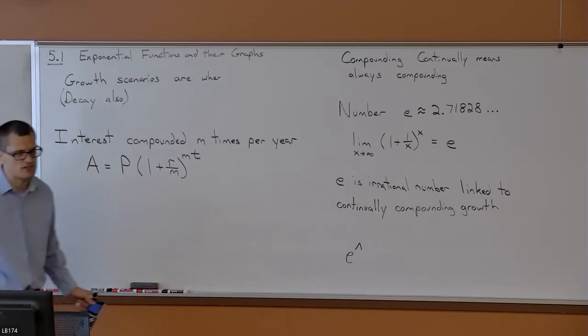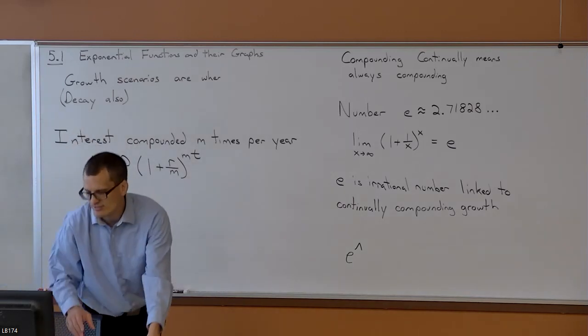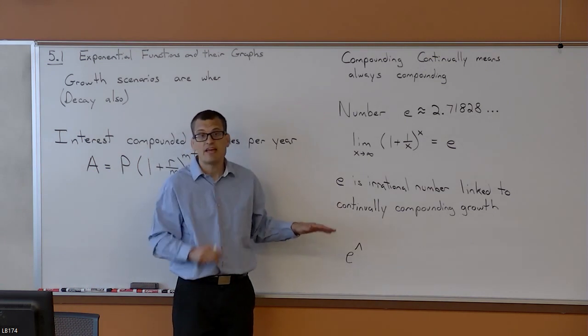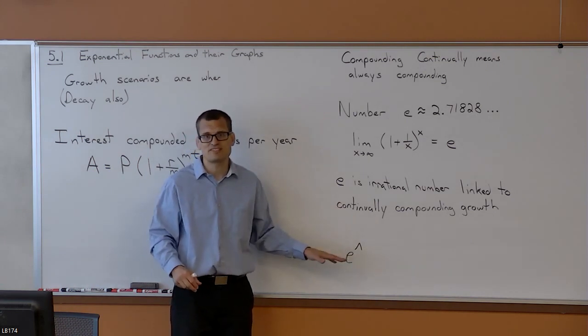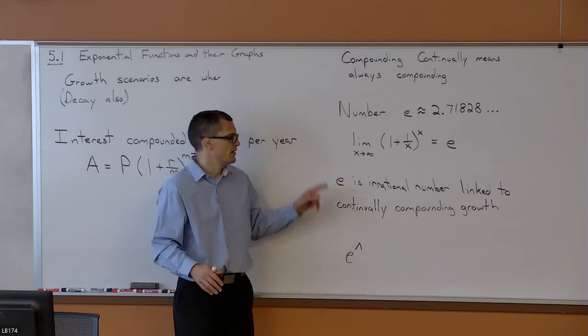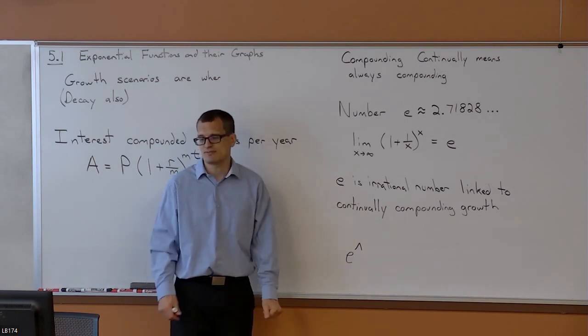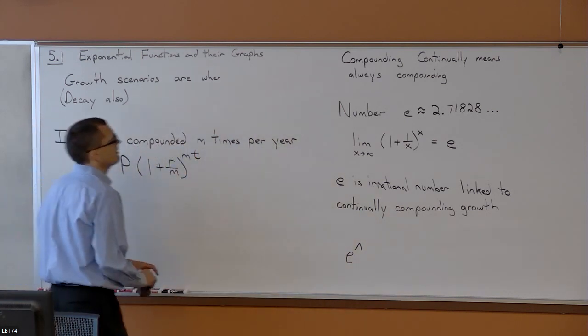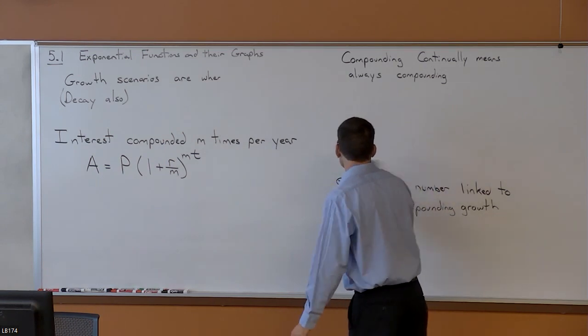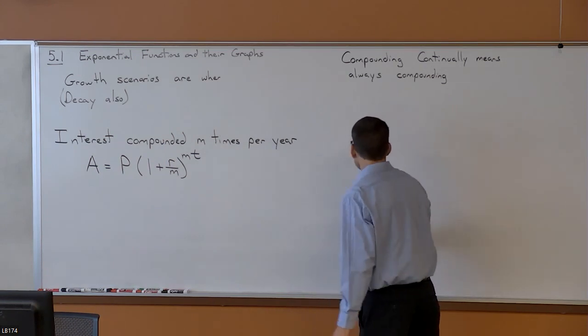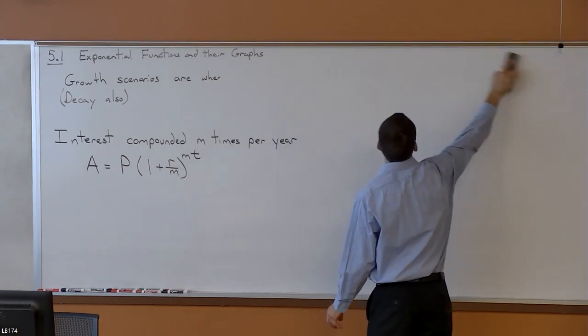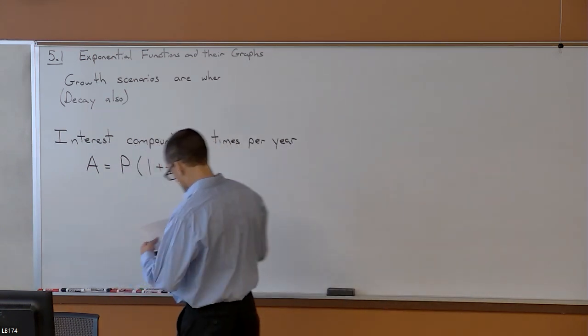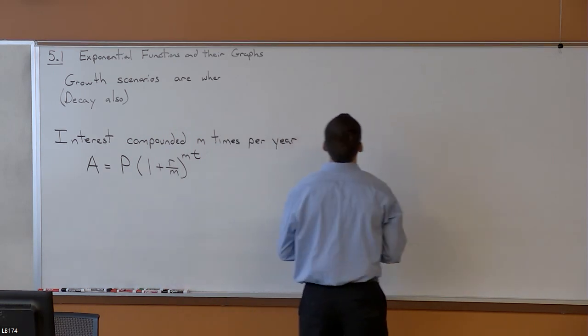So, that's where the E button is on our calculator. And it's so linked to continually compounded growth that it already has the exponents in there. It anticipates that when you're using E, you're going to be using exponents. So, let's take a look at continually compounding growth and do an example of that.